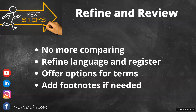Our next step is to refine and review your text. Here you are no longer comparing your translation to the English — we have already done that. Now you are refining your language, paying attention to the register level of your vocabulary. Perhaps add a term in parentheses to make sure that the translation is inclusive for language variations. Sometimes footnotes are needed to include longer explanations.